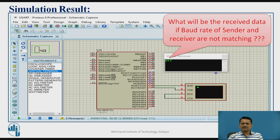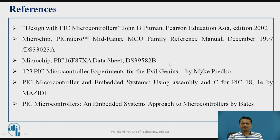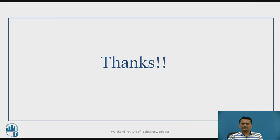Now, just think: what will be the received data if the baud rate of sender and receiver are not matching? Will some data be received, and if yes, what will that data be? These are the references used for this presentation. Thank you.